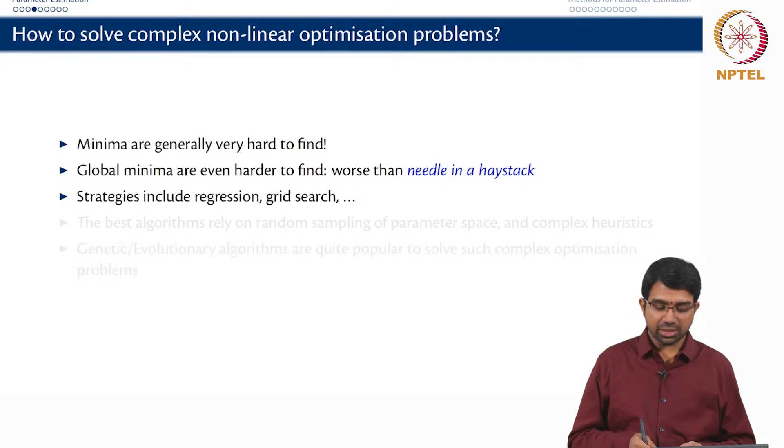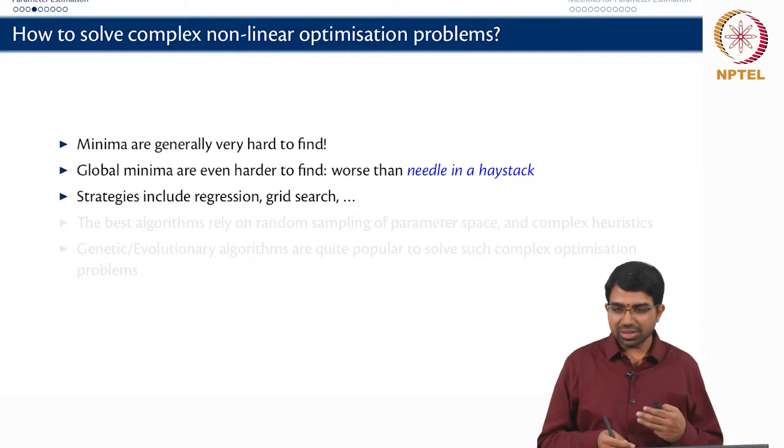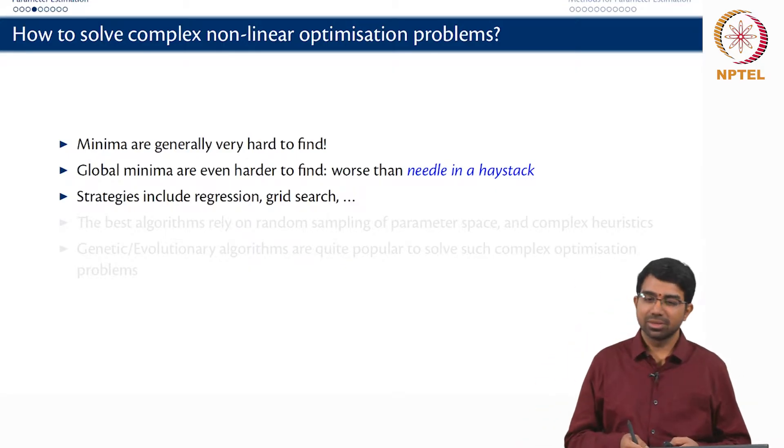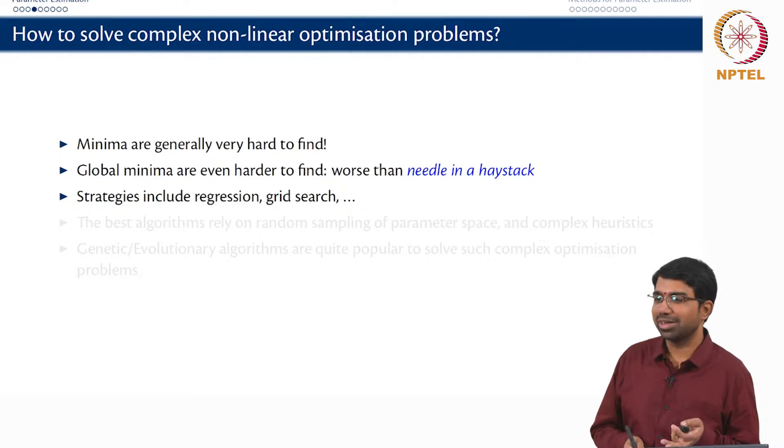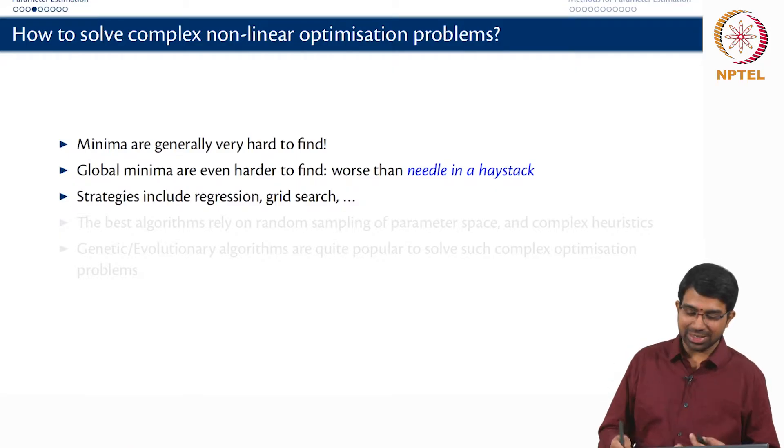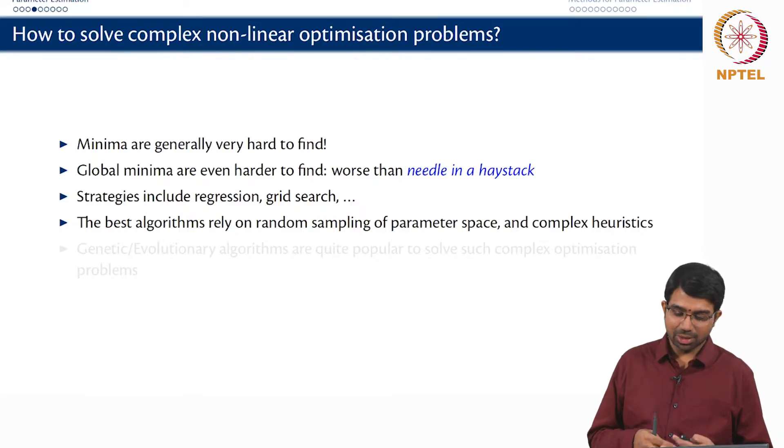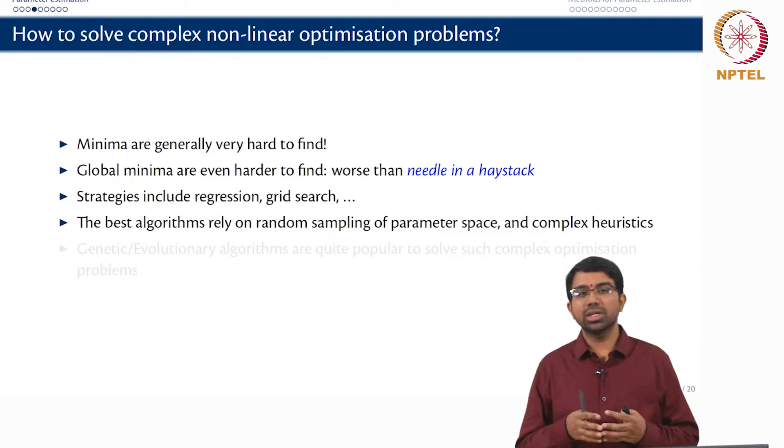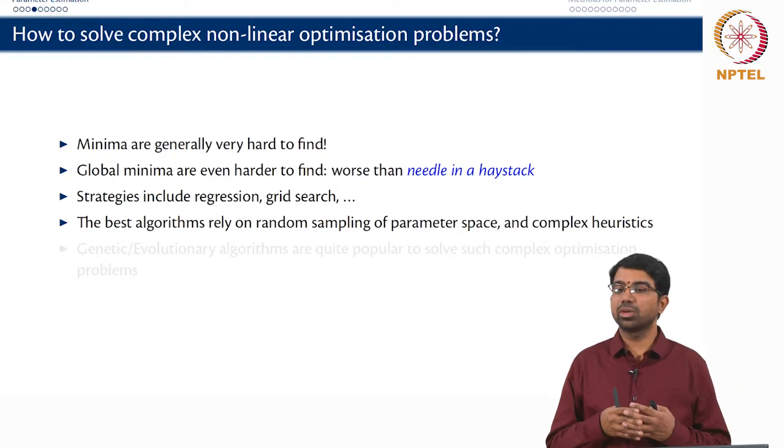And there are many strategies - you can do a grid search, you can do various kinds of regression and so on. Gradient descent are difficult because you do not want to be computing the gradient of that function. It is very expensive to compute the gradient of that function. So gradient descent are not useful. The best algorithms rely on random sampling of parameter space and complex heuristics and these are usually grouped under what are known as direct search algorithms.